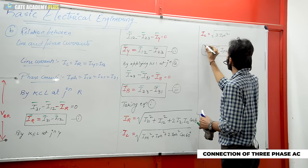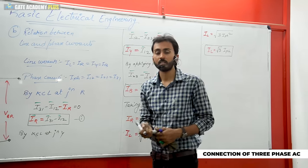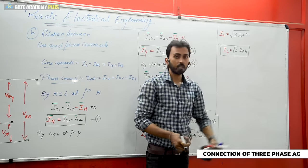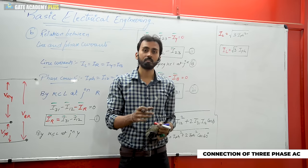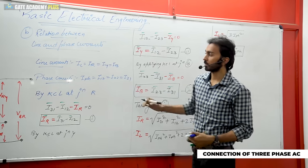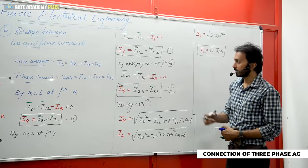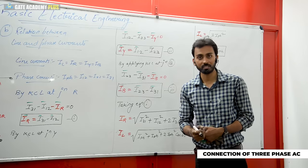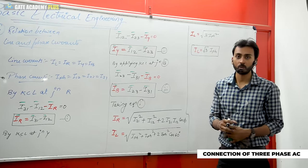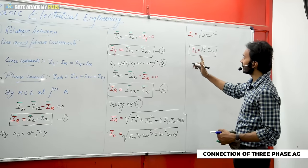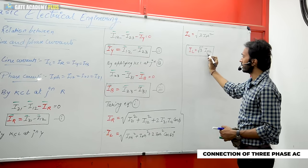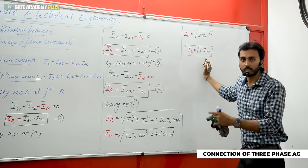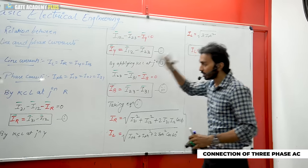This is the final relation for a three-phase balanced delta connected system between line current and phase current: line current IL = √3 times phase current IPH. This is the important relation. It applies to all three phases if the system is symmetrical. For solving numericals, remember: in delta connection, line current is always √3 times phase current, whereas line voltage and phase voltage are equal.